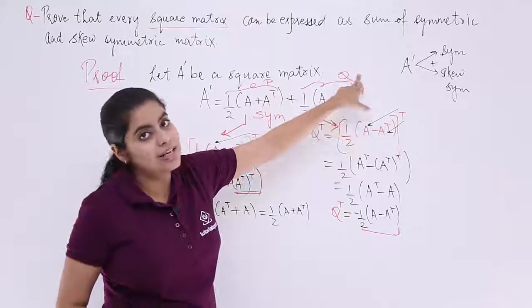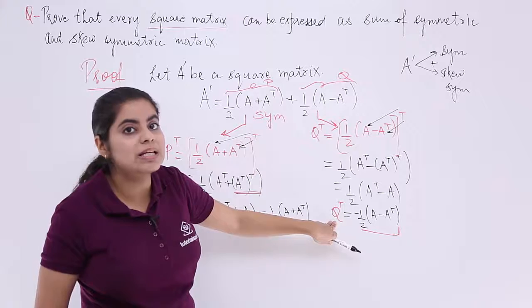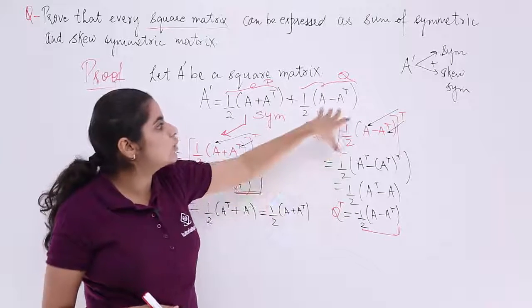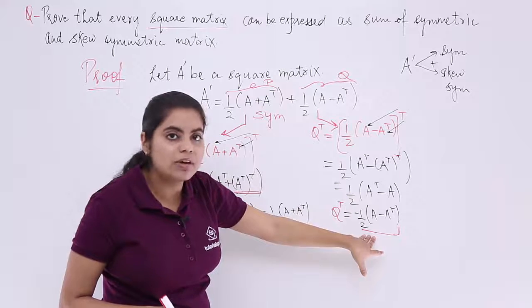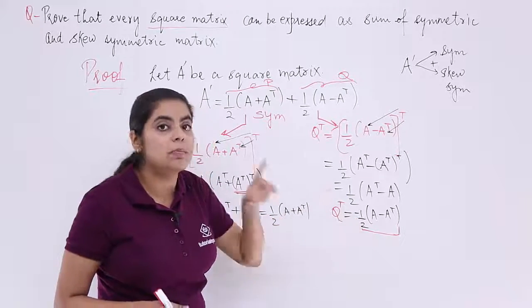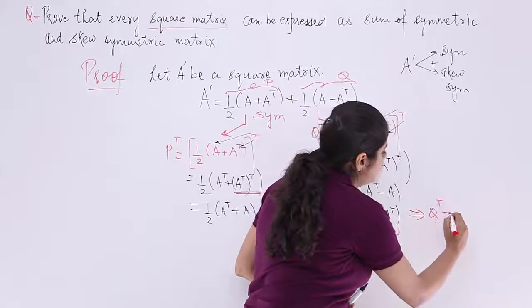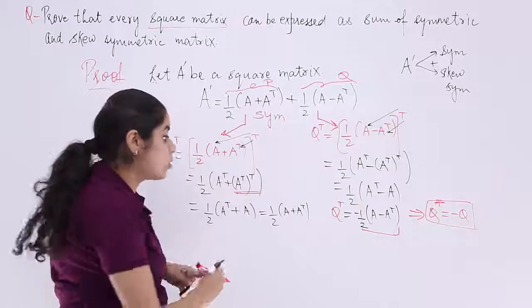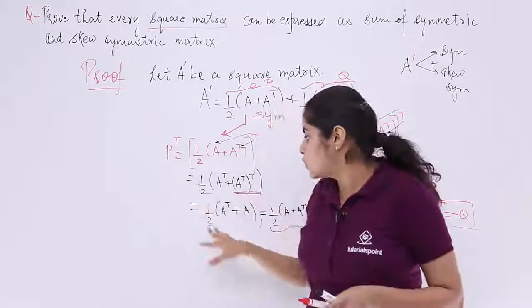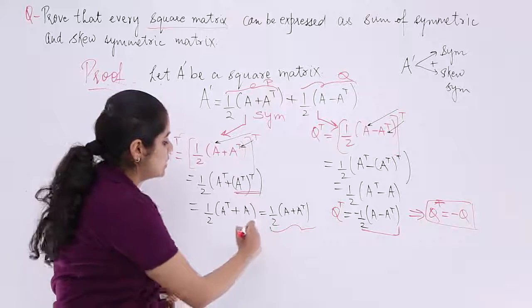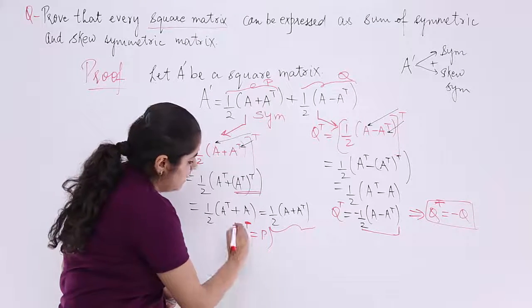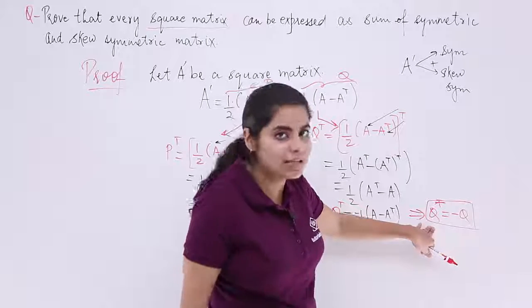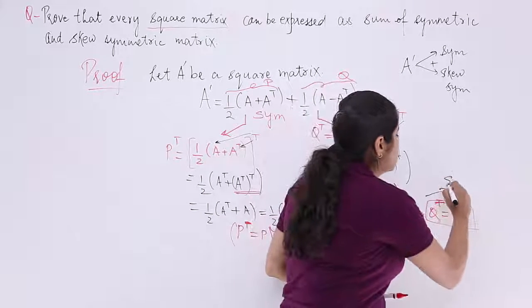Substituting back: Q = half (A − Aᵀ), so Q transpose = −Q. Similarly P transpose = P. Since P transpose equals P, it is symmetric. Since Q transpose equals minus Q, it is skew symmetric.